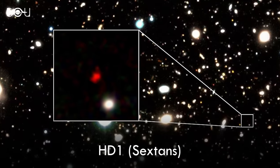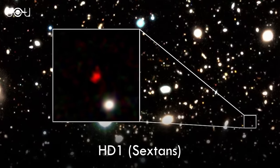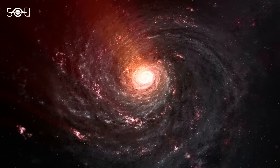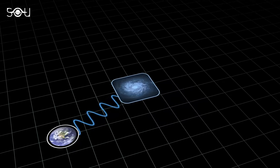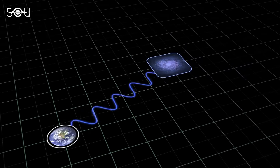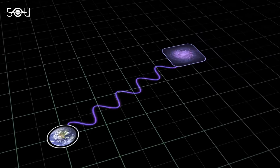However, HD1 is a mystery in itself. First, the galaxy's red color is due to the redshift. Whenever the source of light is moving away from us, the wavelength of the light it emits gets stretched.